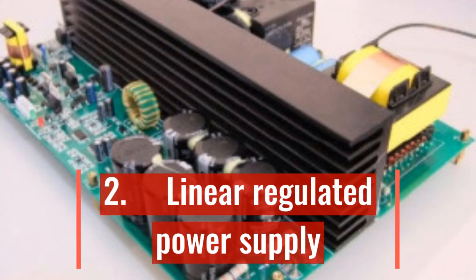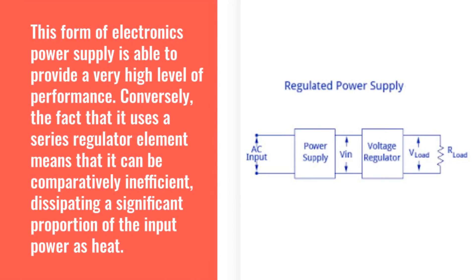2. Linear regulated power supply. This form of electronics power supply is able to provide a very high level of performance. Conversely, the fact that it uses a series regulator element means that it can be comparatively inefficient, dissipating a significant proportion of the input power as heat. However, these power supplies can offer very high levels of regulation with low values of ripple.